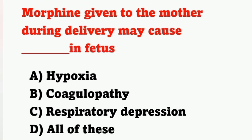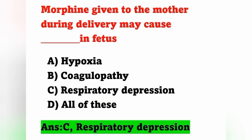The next question: morphine given to the mother during delivery may cause what in the fetus? Options — A: hypoxia, B: coagulopathy, C: respiratory depression, D: all of these. Morphine is contraindicated during delivery because it may cause respiratory depression in the fetus — option C is the correct answer.